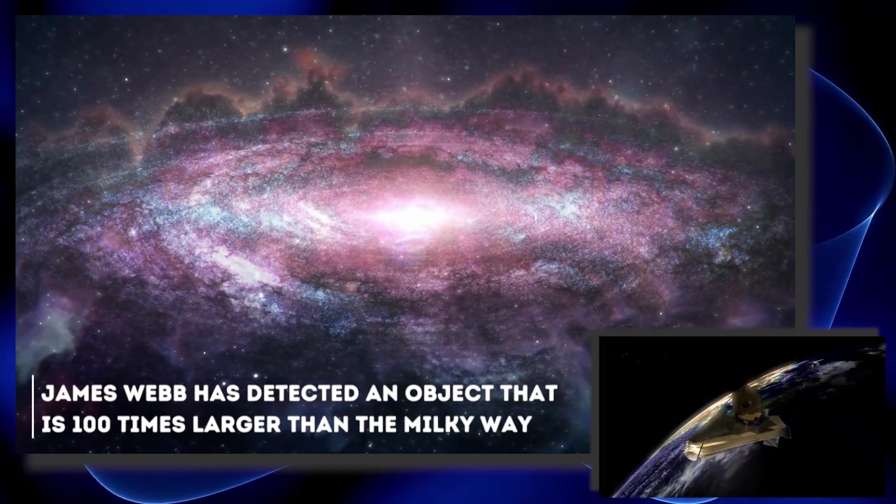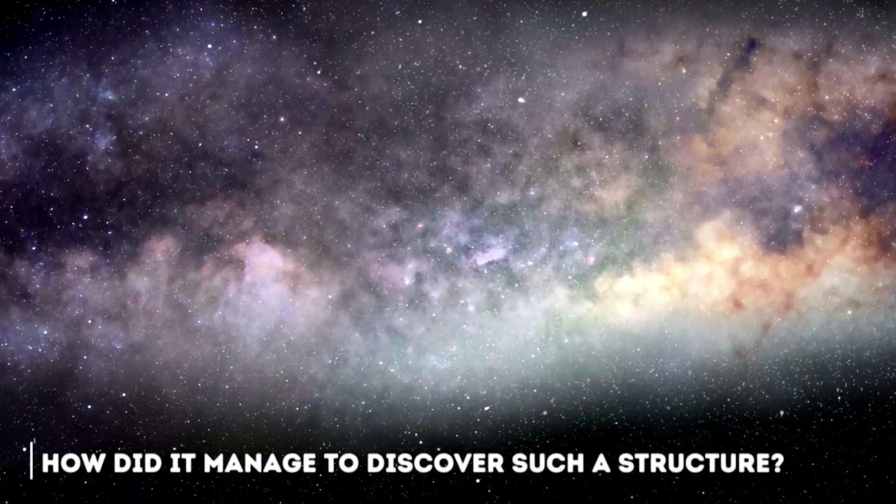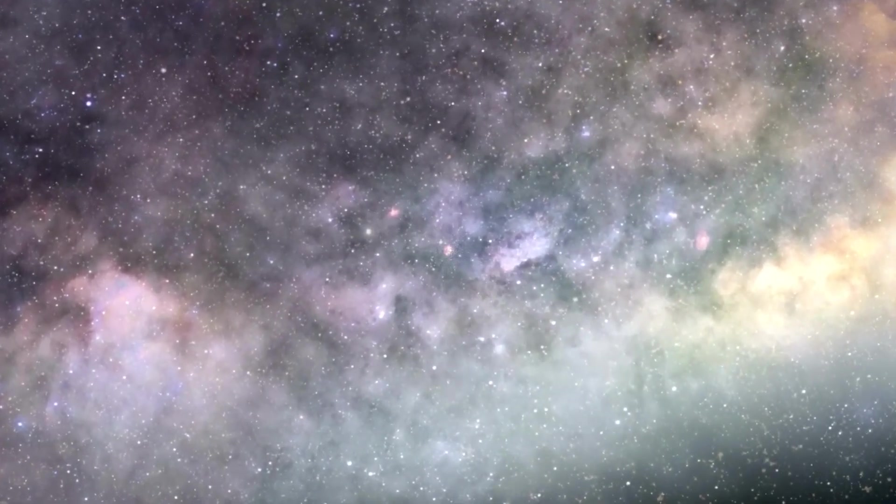Recently the James Webb has detected an object that is 100 times larger than the Milky Way. How did it manage to discover such a structure? And what does this mean for humanity?